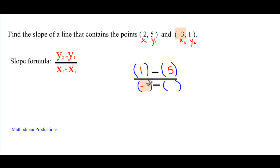X2 is negative 3 and X1 is 2, and calculate. The numerator: 1 minus 5, that's negative 4 over negative 3 minus 2, that's just negative 5. So my slope with those two points is 4 over 5, or 0.8.